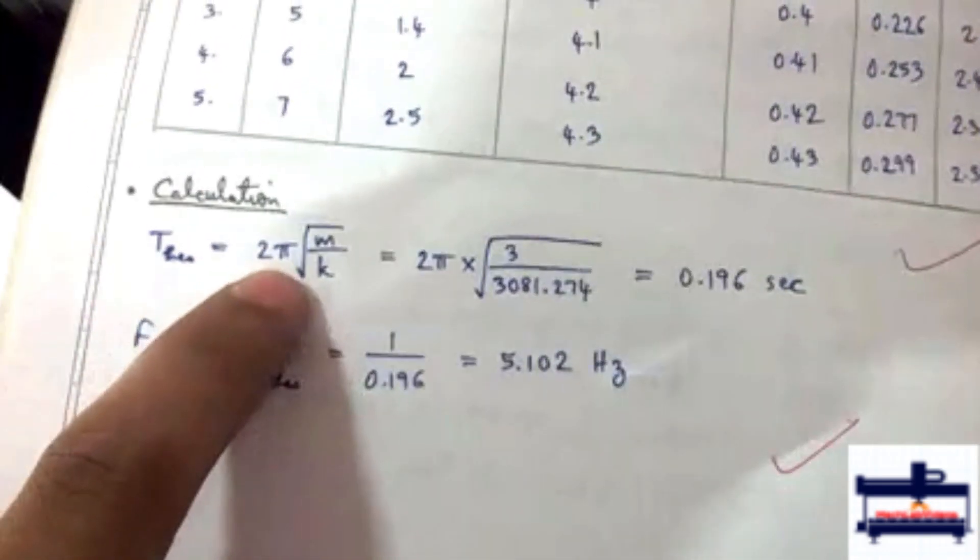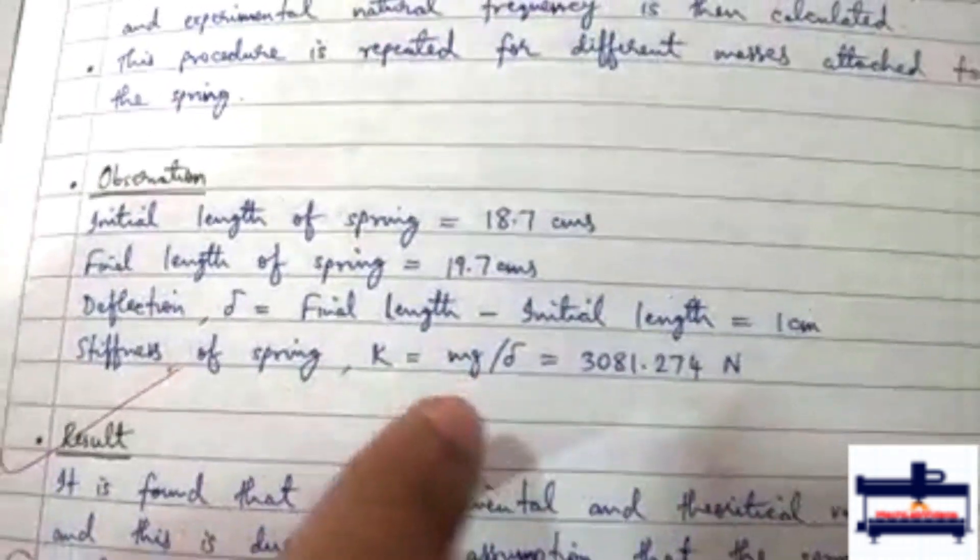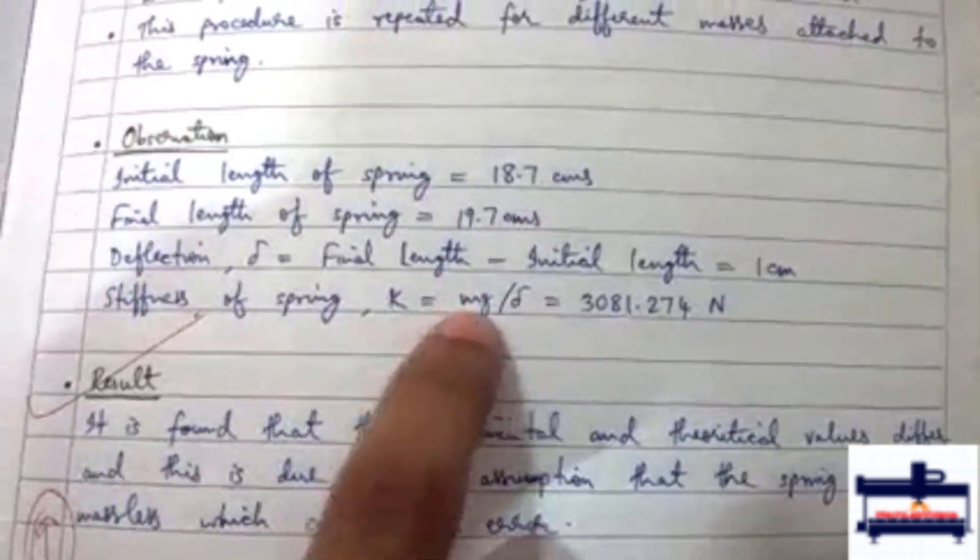For finding theoretical time period and frequency, we use these formulas. Then to find stiffness, we get a deflection value every time we put some mass.